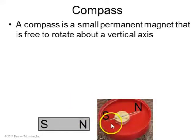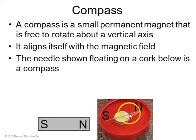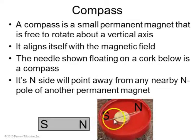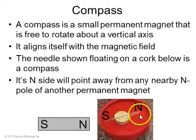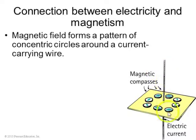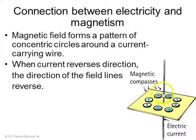A compass is a small permanent bar magnet that is free to rotate about a vertical axis. The pointy side of a compass needle is the N side of that bar magnet, and that will point away from the N side of any other permanent magnet, showing the direction of the magnetic field. If you have a current running through a wire surrounded by compasses, when the current is running down, all these little compasses point clockwise around the current. If you reverse the current direction, all the compasses reverse their direction as well. So electric current creates a magnetic field.